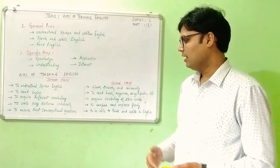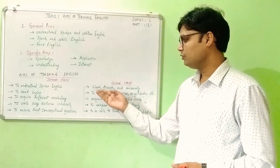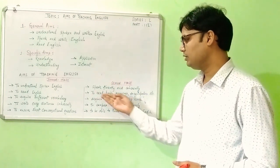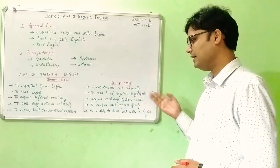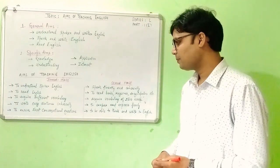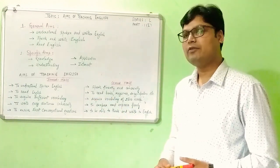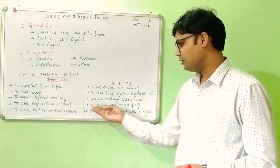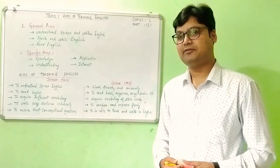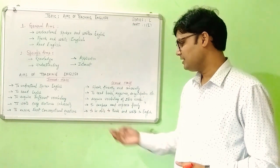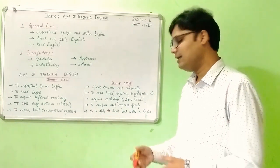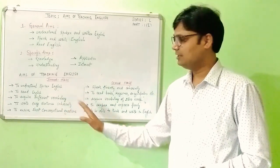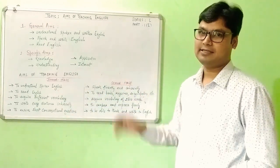At senior stage, a child is expected to speak fluently and coherently, is expected to read books, magazines, encyclopedias, dictionaries, etc. He is expected to acquire a vocabulary of around 2500 words, and he is expected to compose and express freely, and finally he is able to think and write in English. These are the aims of teaching English at junior and senior stage.